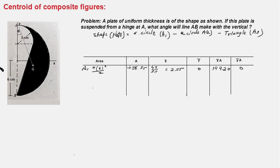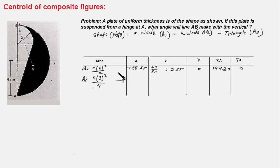Now we take area A2, which is a quarter circle. The area would be πr²/4. With r = 3 cm, it will be π(3²)/4, which works out to 7.07 — entered as minus 7.07 because we are subtracting the area of the quarter circle from the area of the semicircle.